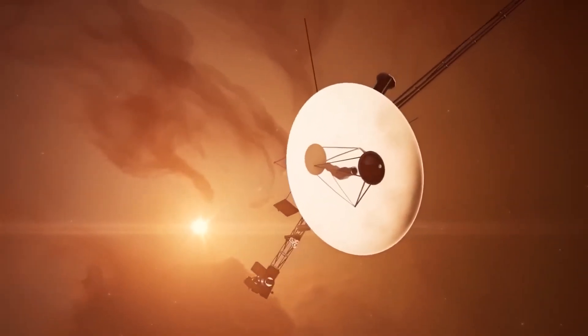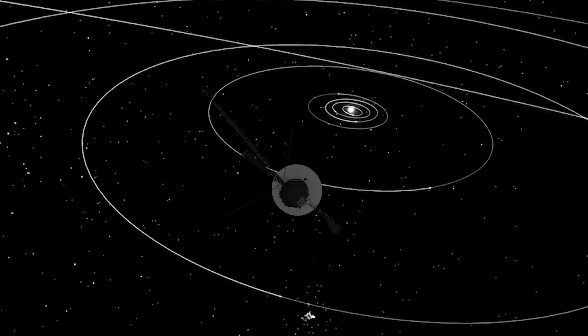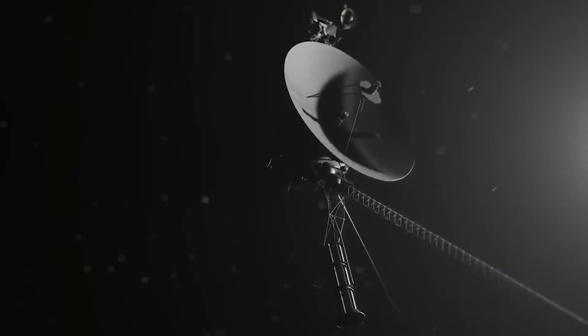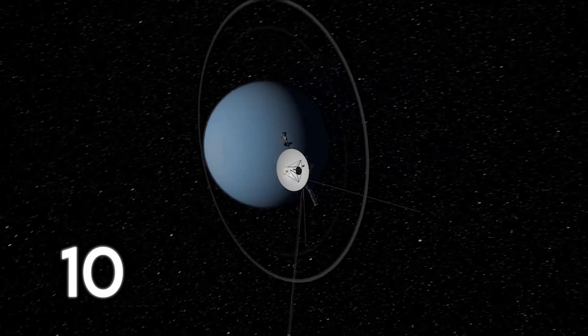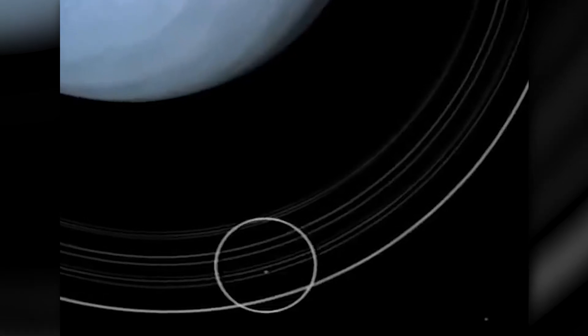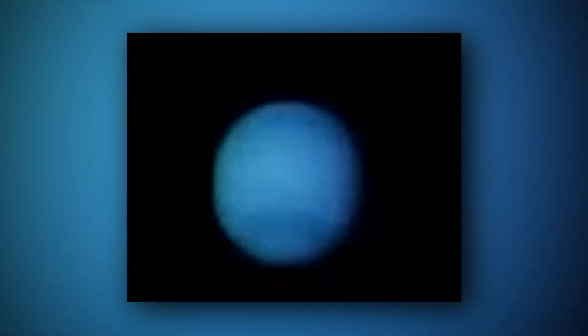Meanwhile, Voyager 2 charted its course through the outer realms of our solar system, achieving historic flybys. In 1986, it approached Uranus, unveiling ten previously unknown moons and expanding our understanding of the distant ice giants.